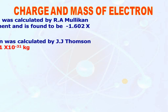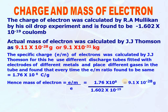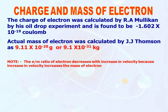Charge and mass of electron: The charge of electron was calculated by R.A. Millikan by his oil drop experiment and is found to be minus 1.602 into 10 to the power minus 19 coulomb. The actual mass of electron was calculated by J.J. Thomson as 9.11 into 10 to the power minus 28 grams or 9.1 into 10 to the power minus 31 kg. The specific charge, that is the e/m ratio of electron, was calculated by J.J. Thomson. He used different discharge tubes fitted with electrodes of different metals and placed different gases in the tube, and found that every time the e/m ratio is the same, equal to 1.76 into 10 to the power 8 coulomb per gram. Note: the e/m ratio of electron decreases with increase in velocity because increase in velocity increases the mass of electron.